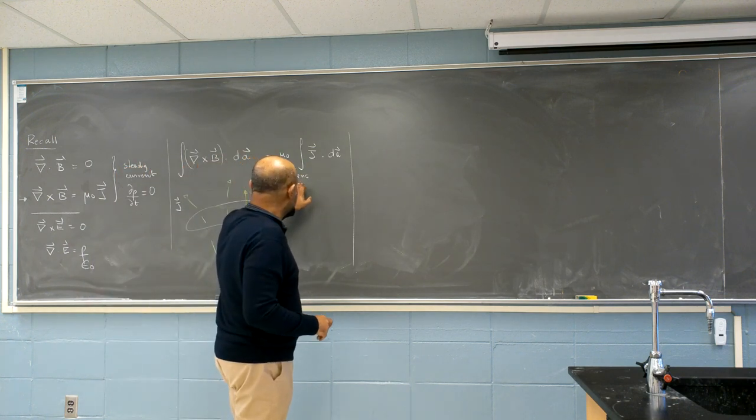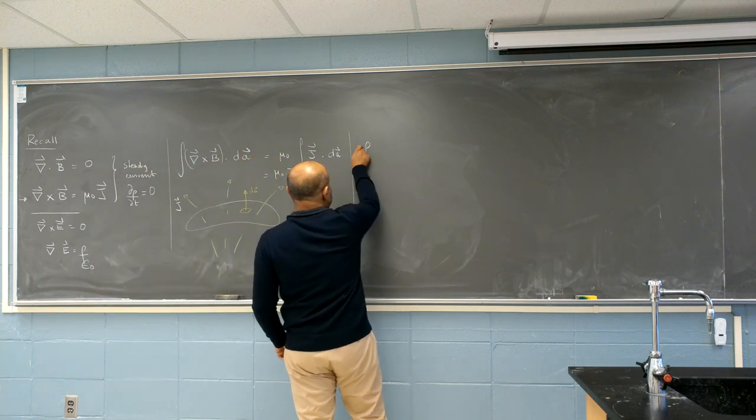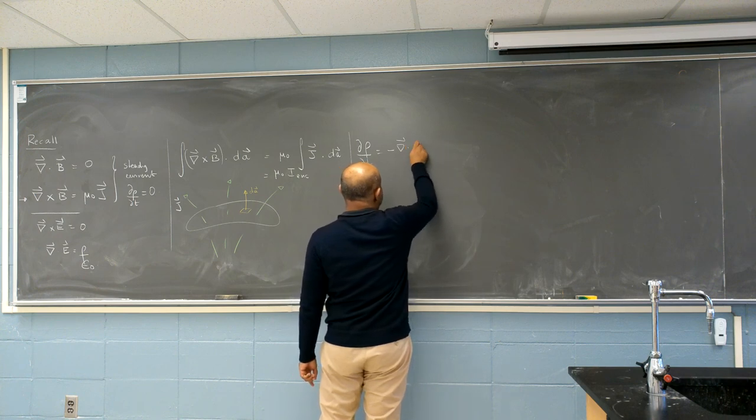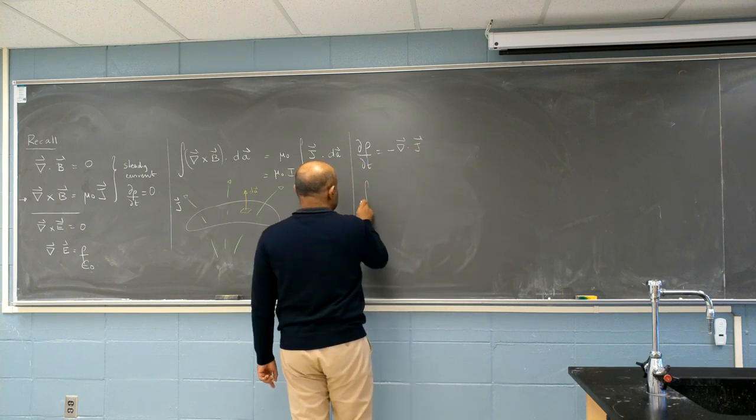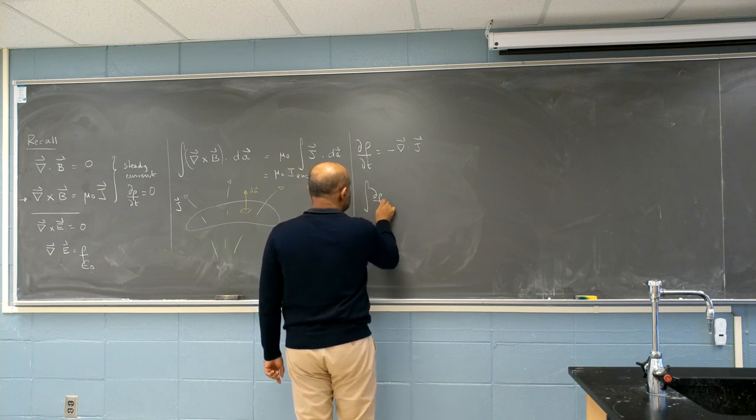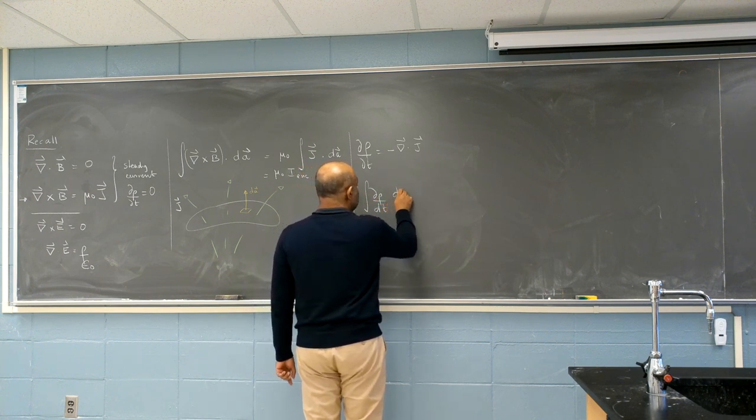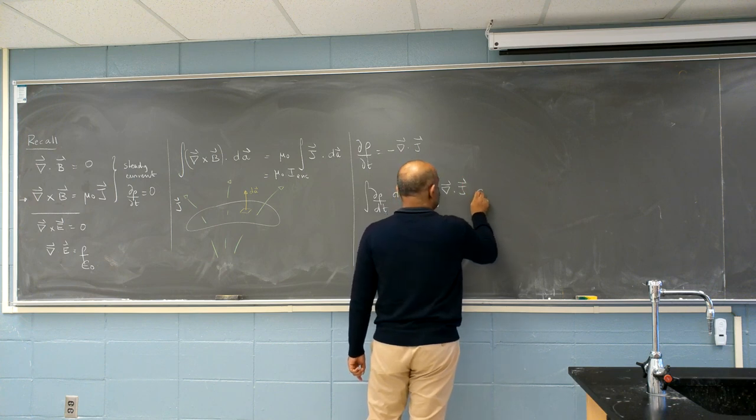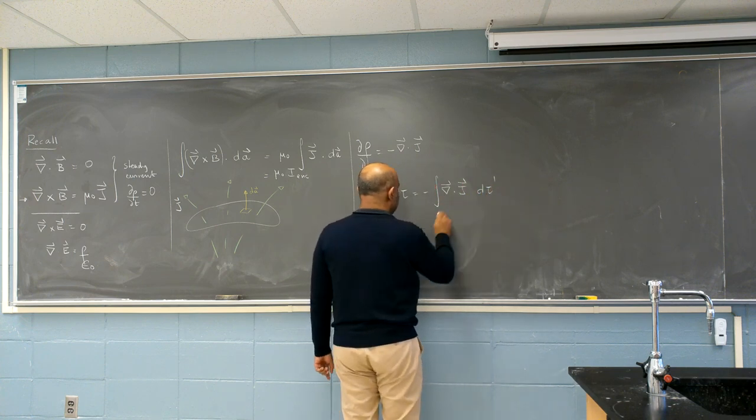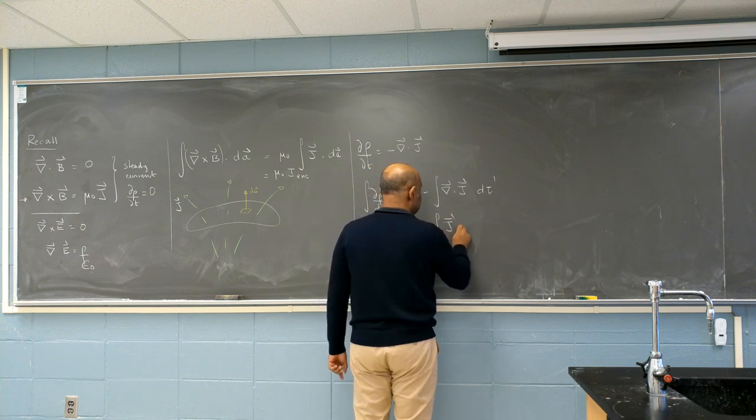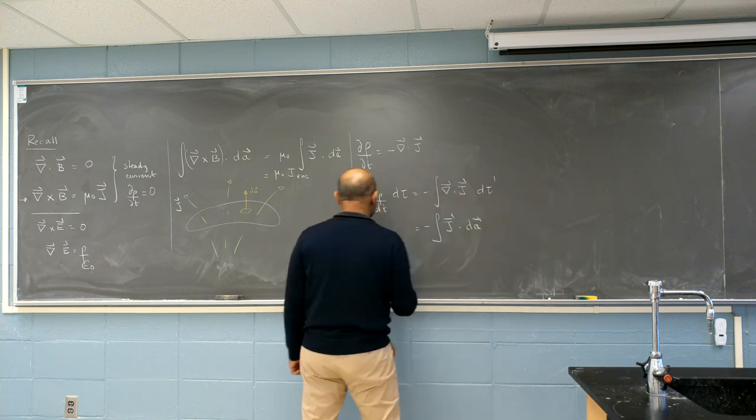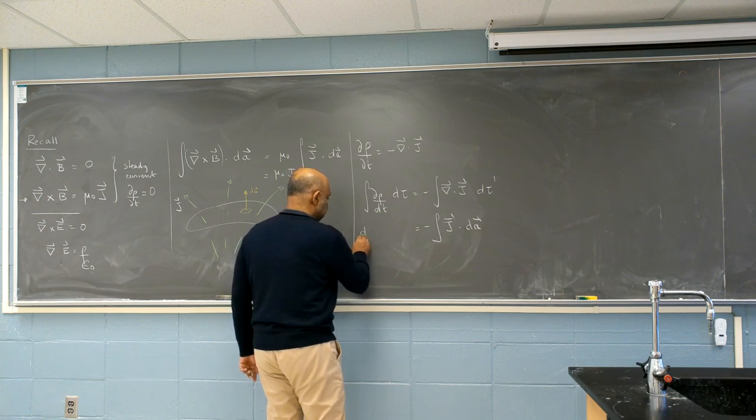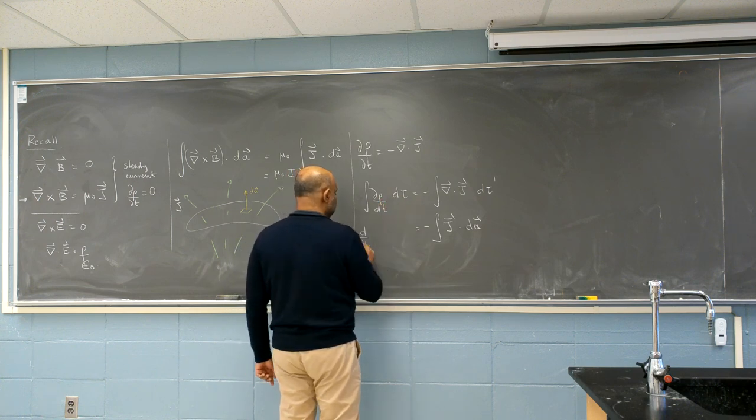Let's again very quickly see where this comes from. So d rho dt, this is the continuity equation, equals minus divergence of j. And so I do d rho dt d tau on both sides. Using divergence theorem, I get j dot dA. And I can pull this out. And then it becomes a proper derivative, because all of space has been integrated.